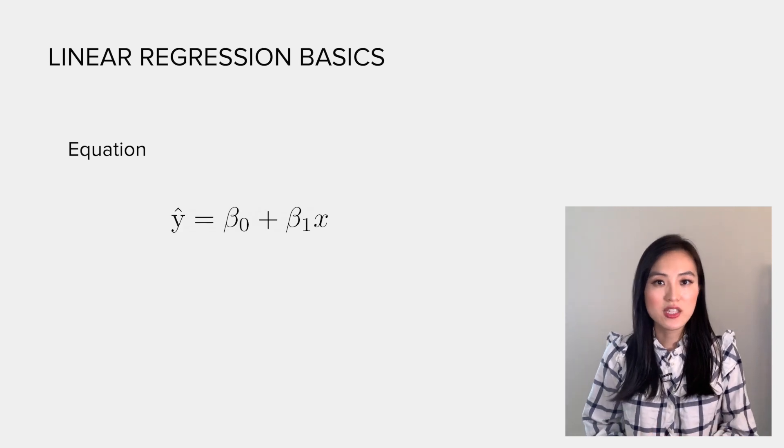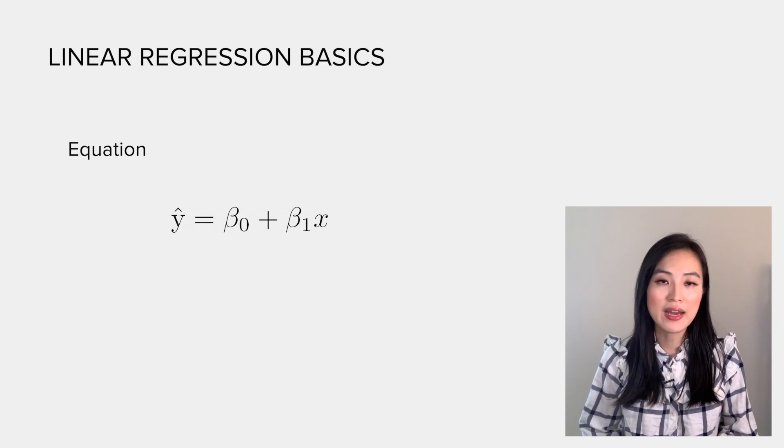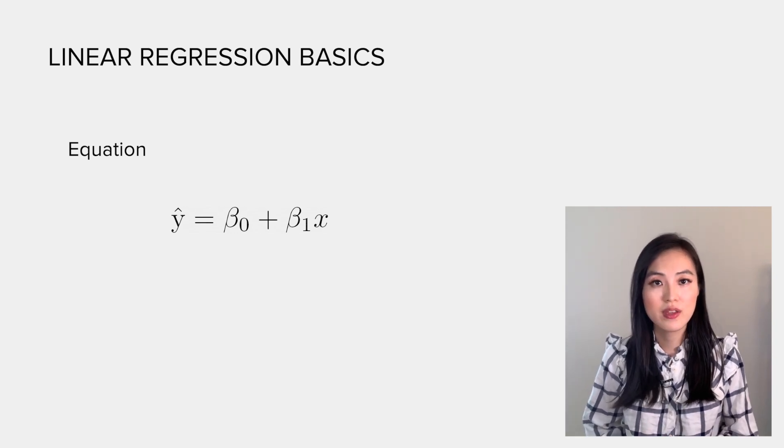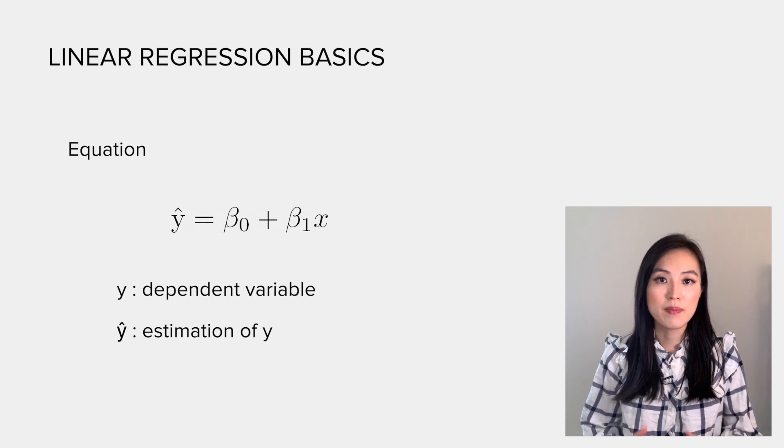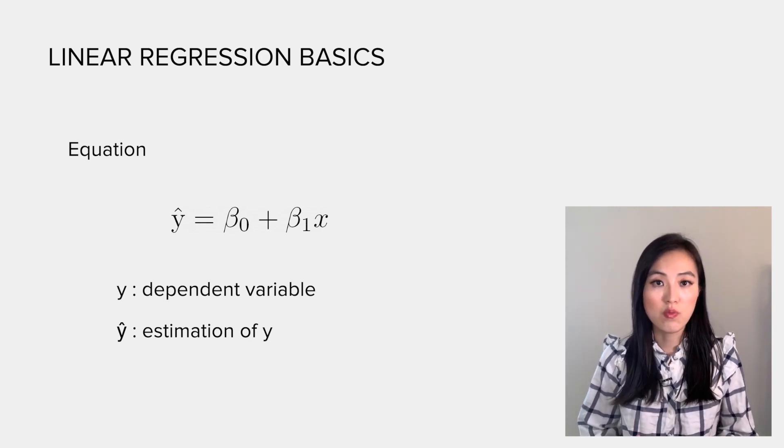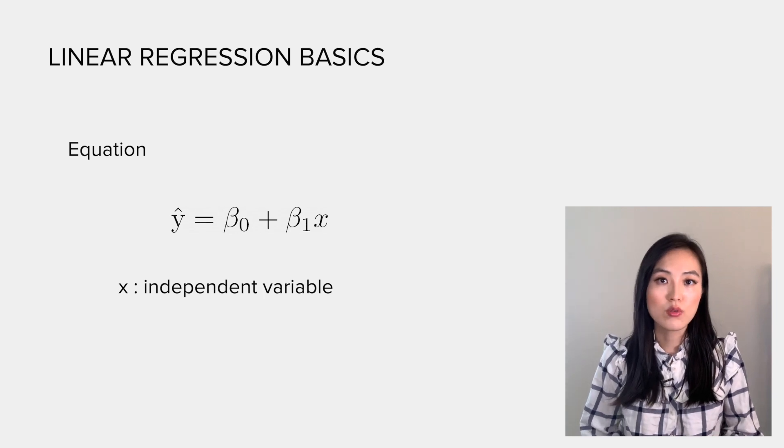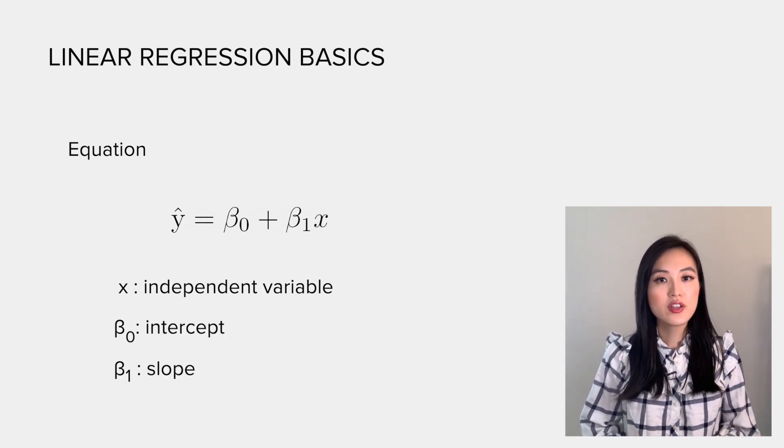For the simplest case, we can use y hat equals beta_0 plus beta_1 multiplied by x to model the data. y is the variable we want to predict; it's called the dependent variable. And y hat is the estimate value of y. x is a variable we could use to predict y; it's called an independent variable.